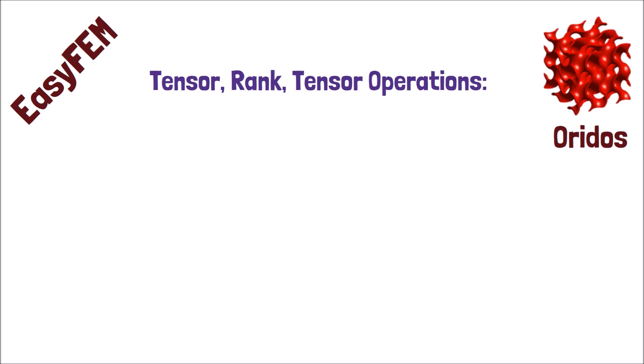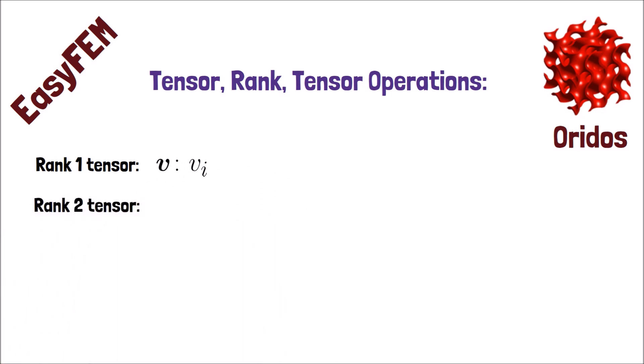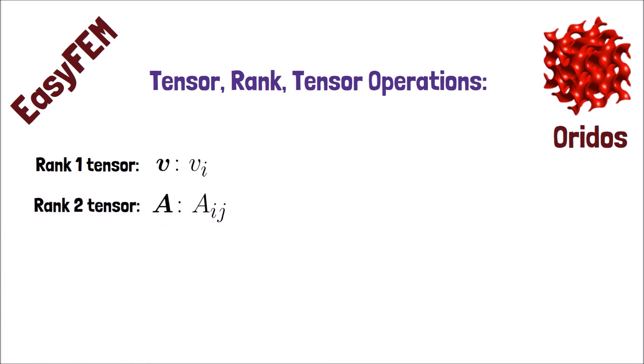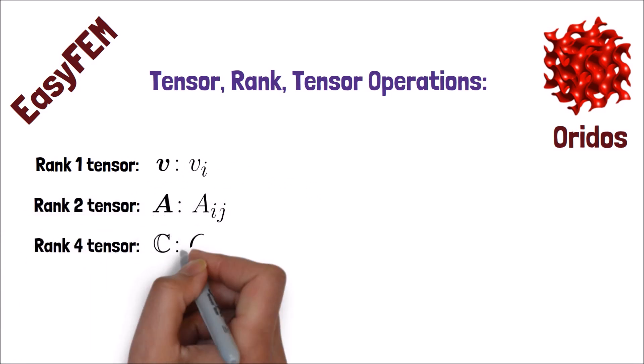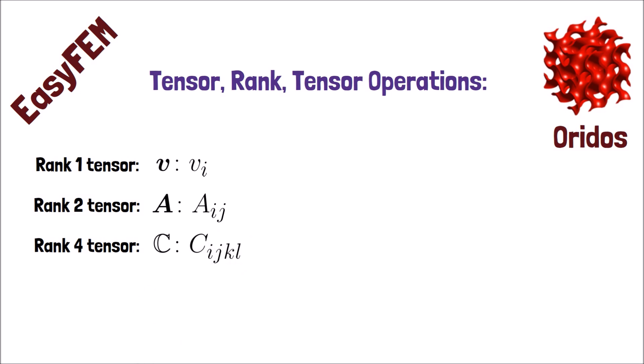For example, a scalar will be rank 0, a vector is rank 1, and a matrix is rank 2. Or another example related to structural mechanics, the material tangent stiffness matrix is rank 4, which I will talk about it in future videos.